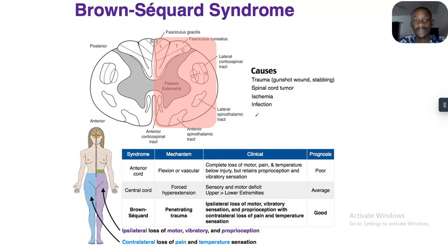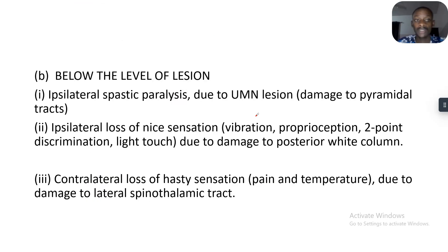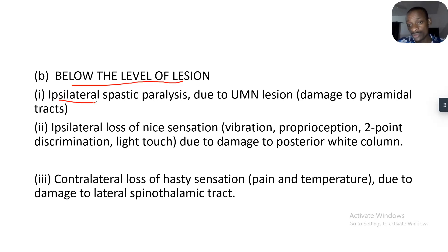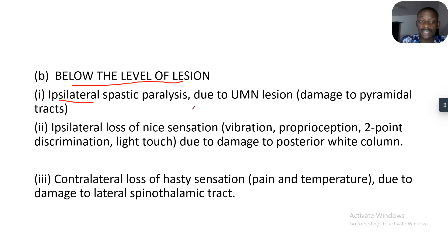Below the level of the lesion, we have ipsilateral spastic paralysis due to an upper motor neuron lesion — damage to the pyramidal tract. There is also ipsilateral loss of fine sensation, including vibration, proprioception, two-point discrimination, and light touch, due to damage to the posterior white column.